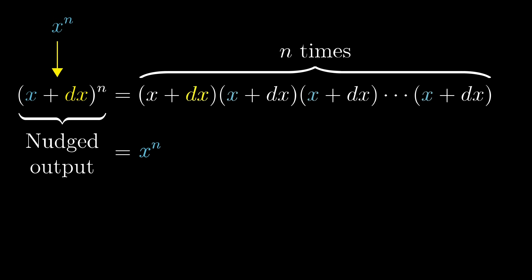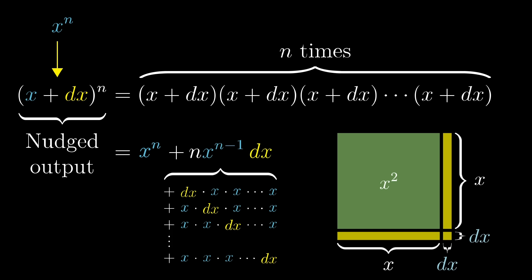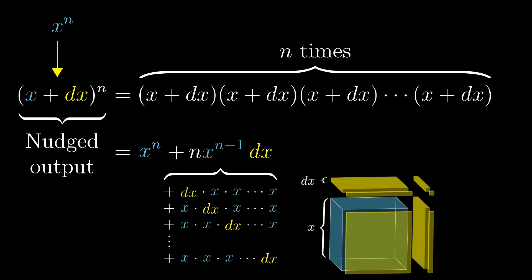The first term in your expansion is x to the n. This is analogous to the area of the original square, or the volume of the original cube from our previous examples. For the next terms in the expansion, you can choose mostly x's with a single dx. Since there are n different parentheticals from which you could have chosen that single dx, this gives us n separate terms, all of which include n-1 x's times a dx, giving a value of x to the power n-1 times dx. This is analogous to how the majority of the new area in the square came from those two bars, each with area x times dx, or how the bulk of the new volume in the cube came from those three thin squares, each of which had a volume of x squared times dx. There will be many other terms at this expansion, but all of them are just going to be some multiple of dx squared, so we can safely ignore them.